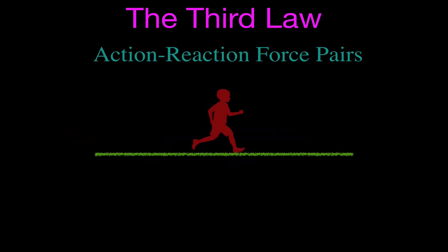Here we have a boy running. When the boy runs, he has his foot on the ground and he's going to be pushing on the ground — so we have the force on the ground from the child. Then the opposite force is the force from the ground on the child — the ground pushes back. You push one way, the ground pushes back, just like when you push on a wall but with your foot when you're running.